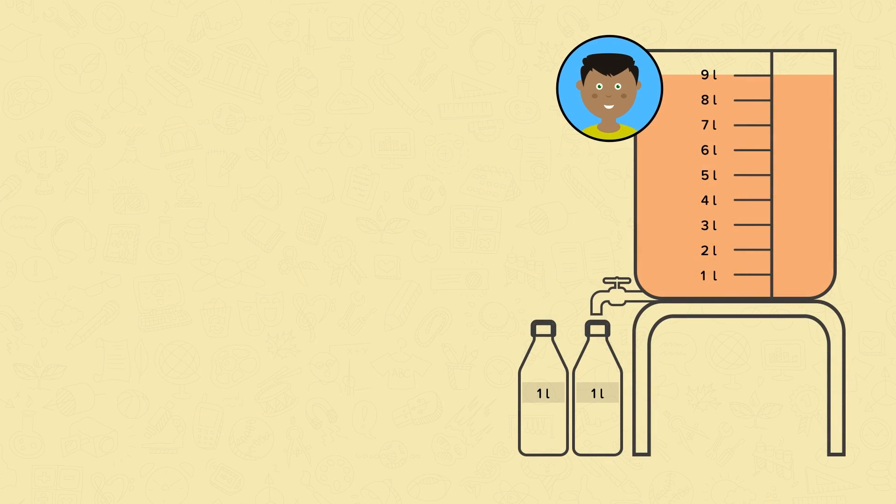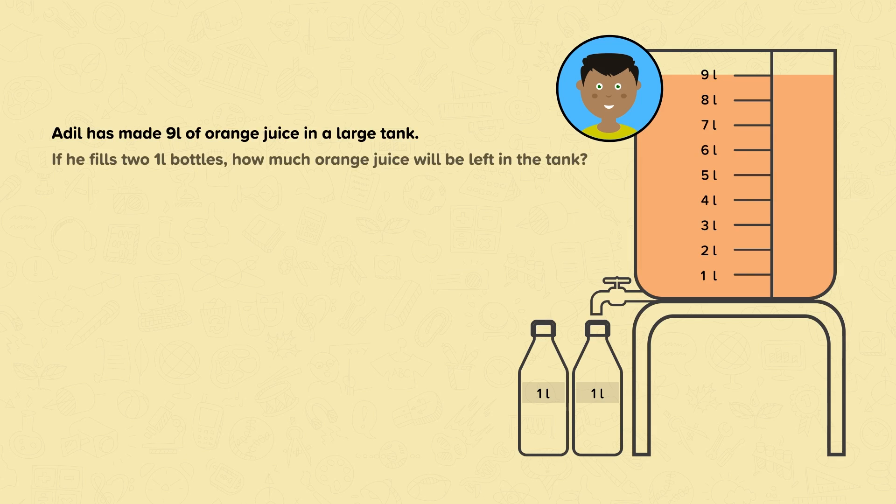Now let's look at another problem. Adil has made 9 liters of orange juice in a large tank. If he fills two 1 liter bottles, how much orange juice will be left in the tank? For this calculation, orange juice is being emptied or taken away from the tank. So to solve this, we will use subtraction.